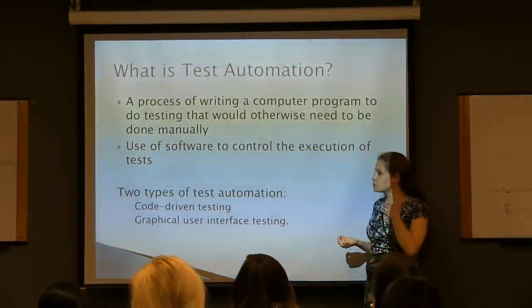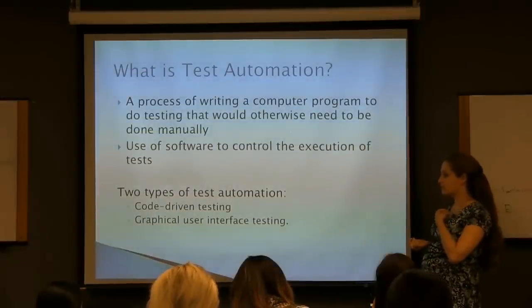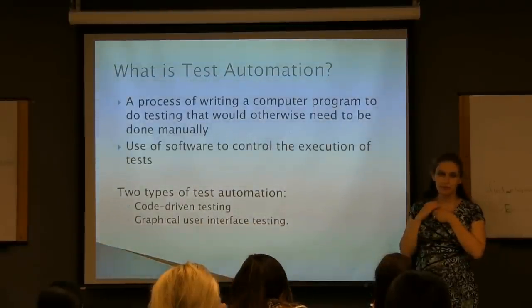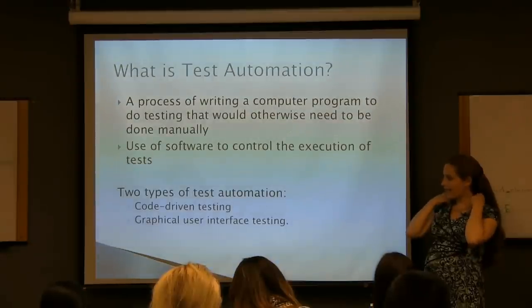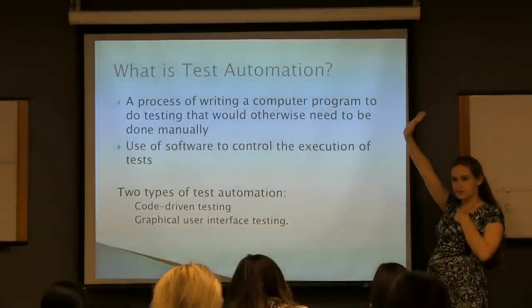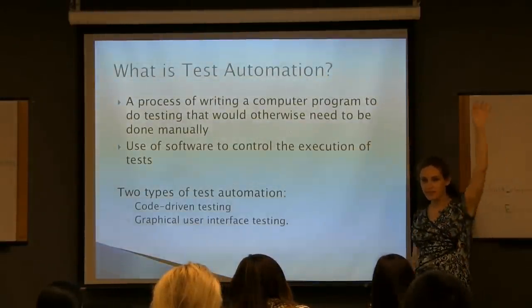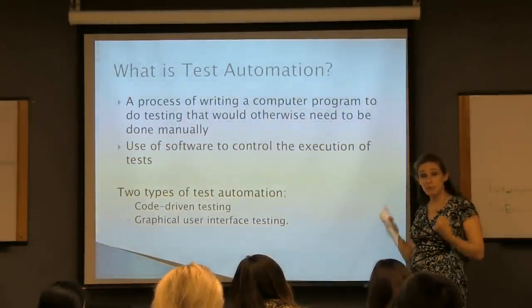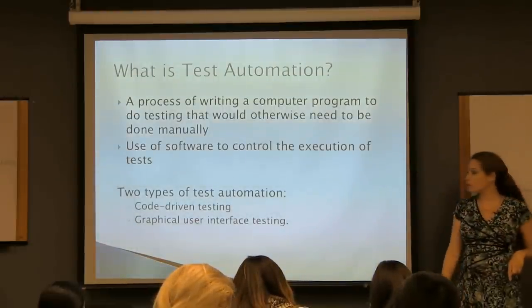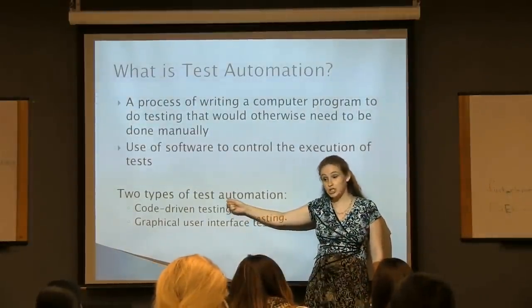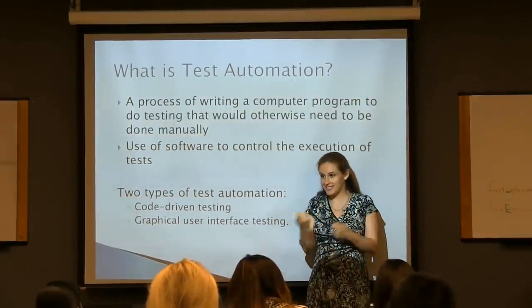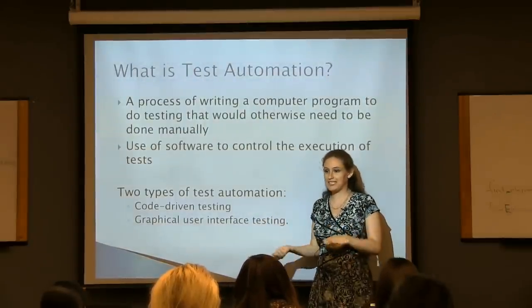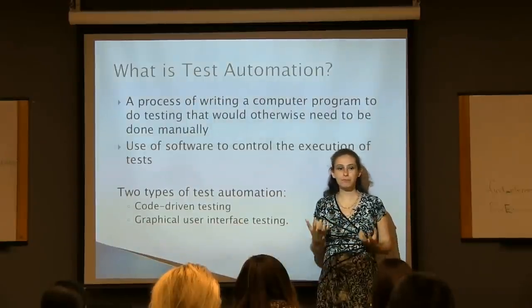There are two types of test automation: code-driven testing and graphical user interface testing. Which one do you think our stuff falls under? If you think it's the first one, raise your hand. If you think it's the second one, raise your hand. It's actually both. We're going to be using TestUnit, which is actually a unit testing framework designed for code testing, not for user interface testing. And then we're going to be using WebDriver, which is designed for user interface testing. We're combining both.